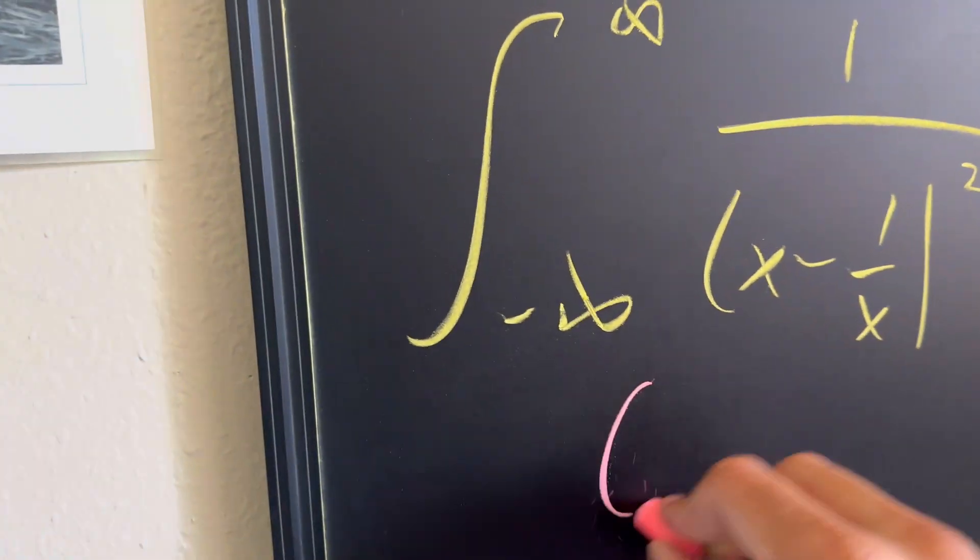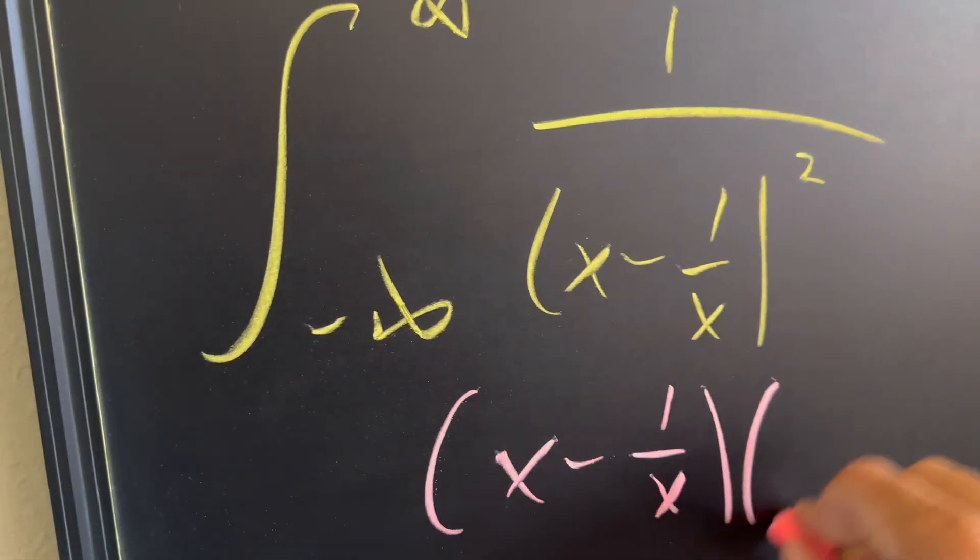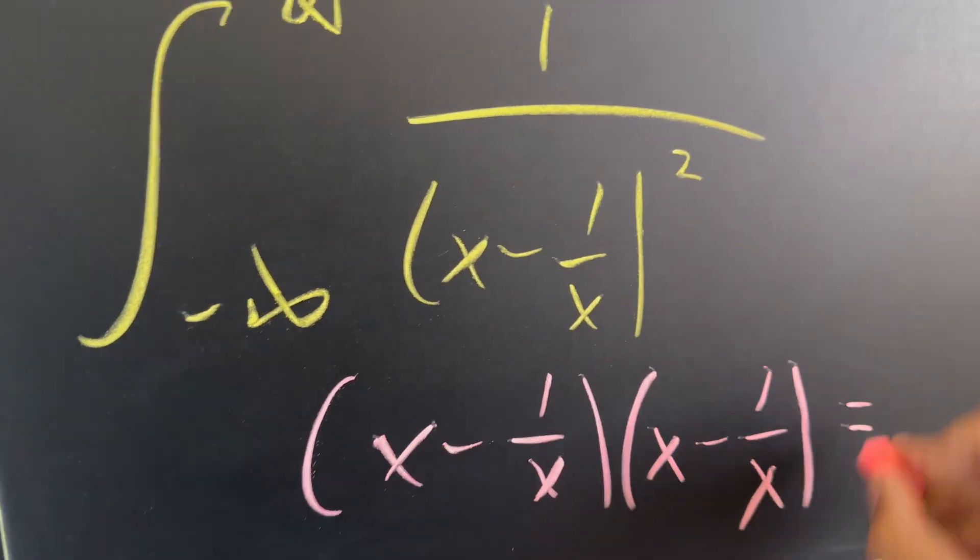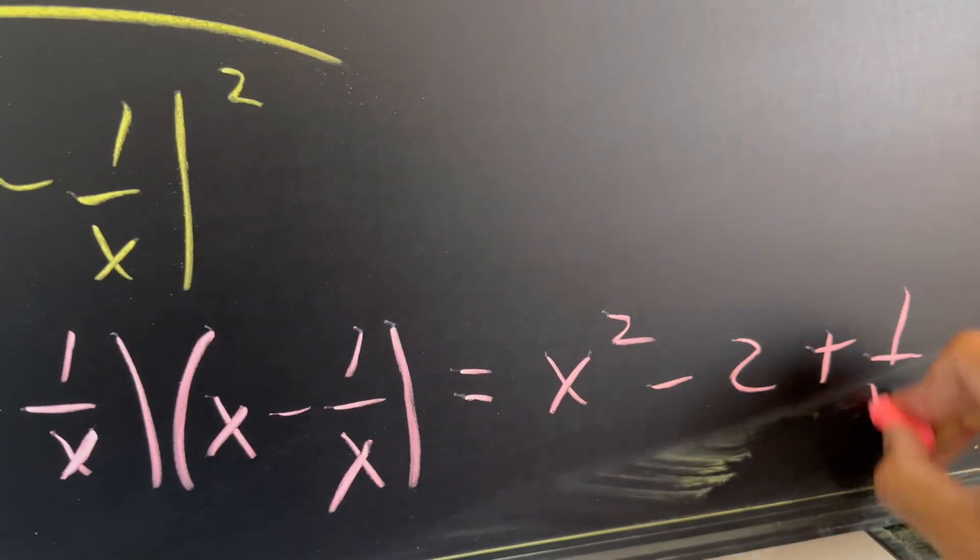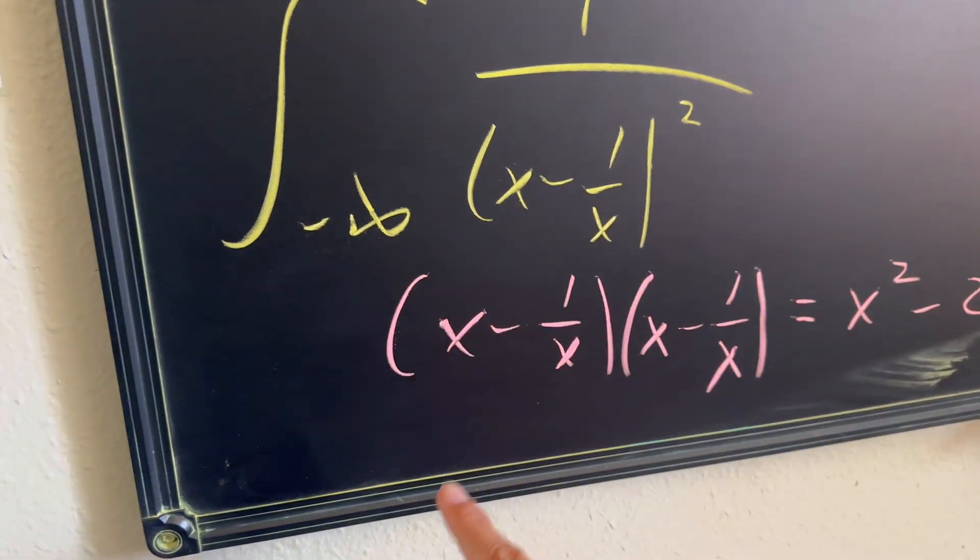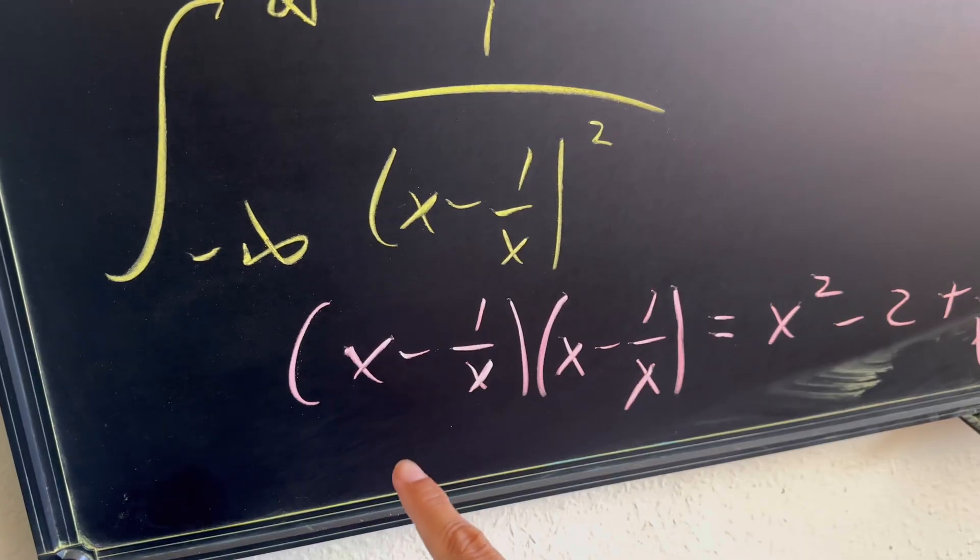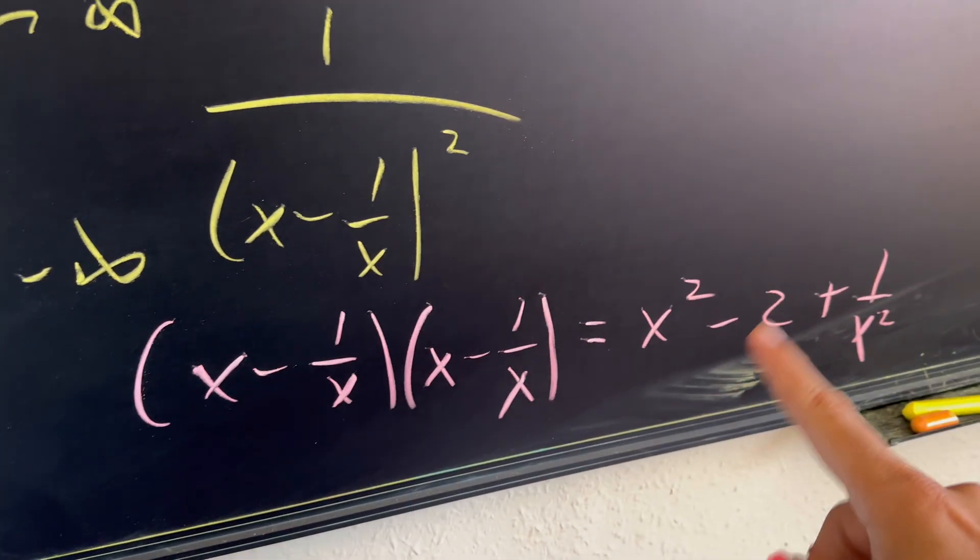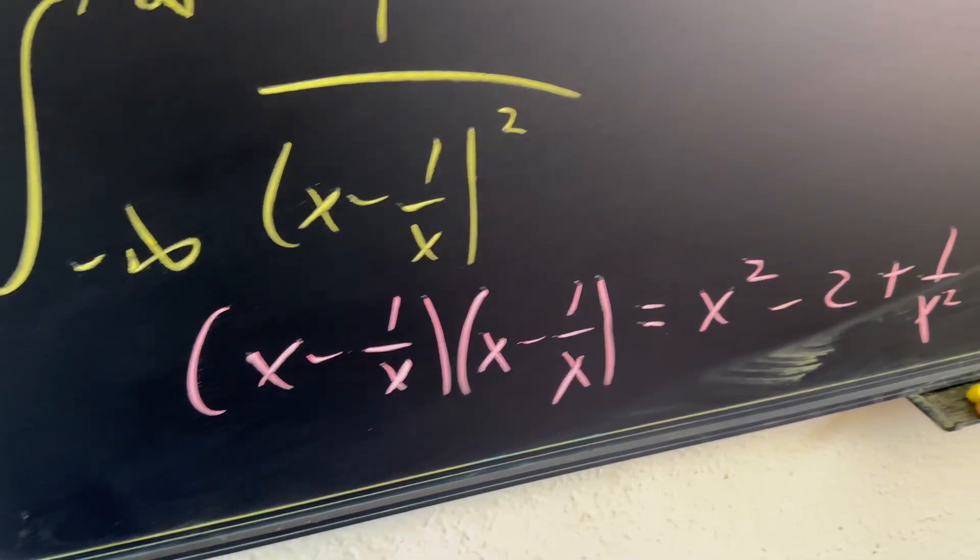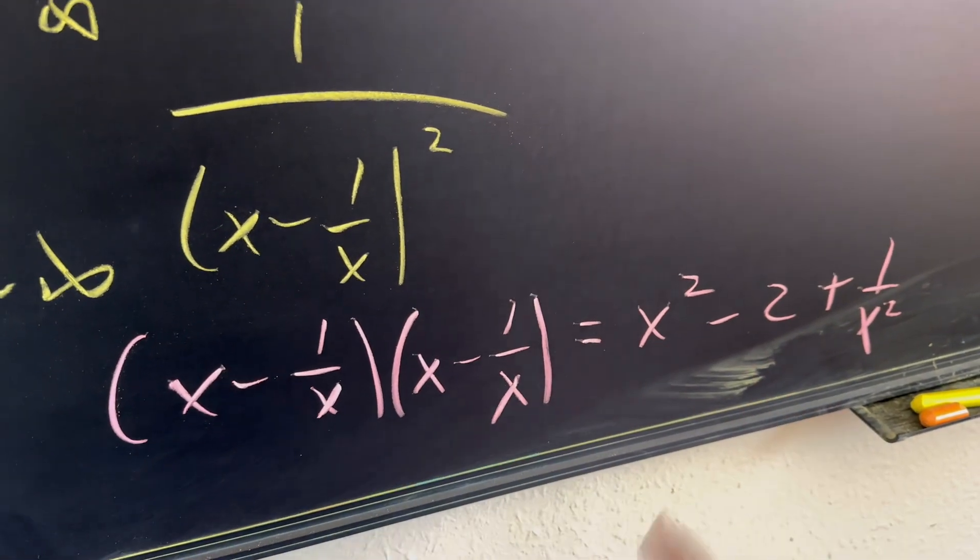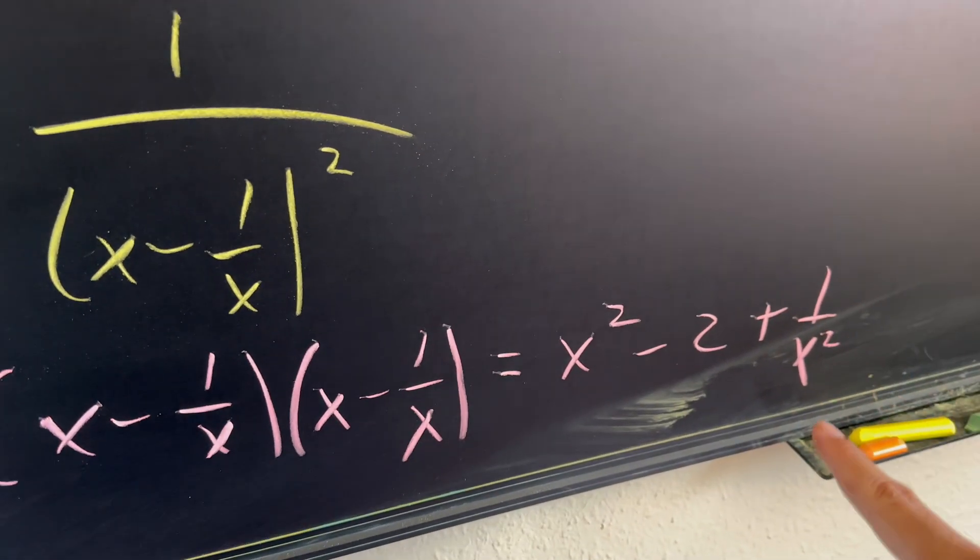And by that, I just mean what would happen if I were to rewrite it like this. This will become x squared minus two plus one over x squared. Let's think about how I got that. x times x is x squared. x times negative one over x is negative one. And then you do it again. Negative one over x times x is also negative one. When you add those together, I get the negative two, and then I have the positive one over x squared.